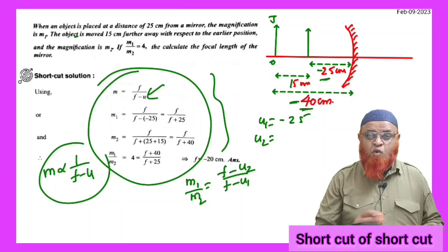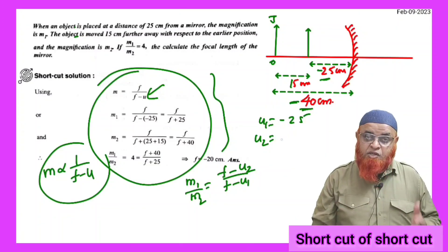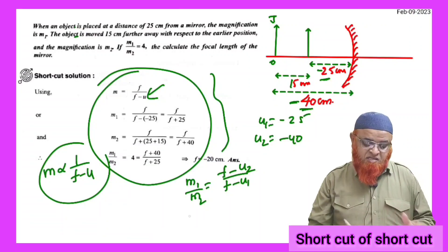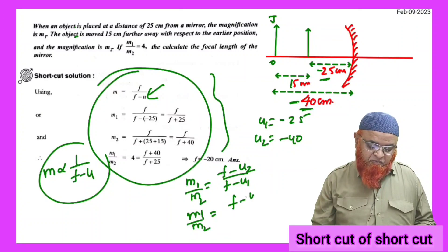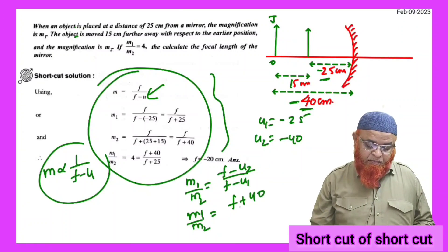And now finally, when object is shifted left side, what happens to the magnification? U2 is taken as minus 40. That is it. You can just substitute here.